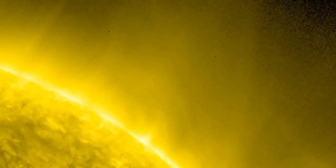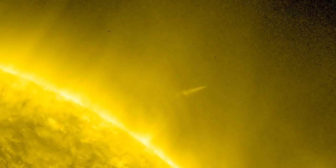Comet Lovejoy, which reached perihelion on December 15, 2011, is the best-known recent Kreutz group sungrazer, and so far it is the only one that NASA's solar-observing fleet has seen survive its trip around the Sun.